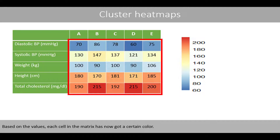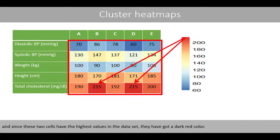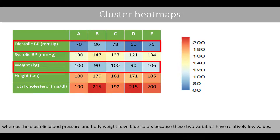Based on the values, each cell in the matrix has now got a certain color. Since this cell has the lowest value in the dataset, it will get a dark blue color. And since these two cells have the highest values in the dataset, they have got a dark red color. We see that body height and total cholesterol level have a red or orange color, since they have relatively high values, whereas the diastolic blood pressure and body weight have blue colors, because these two variables have relatively low values.